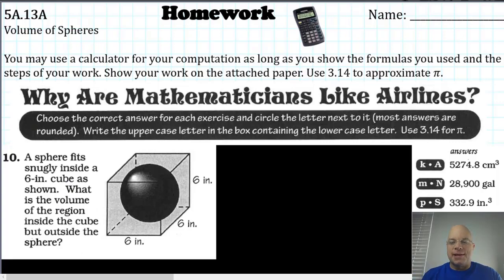For some reason I'm having trouble saying the word sphere. The region inside the cube but outside the sphere can be found by finding the volume of the cube and then subtracting the volume of the sphere. The key word here, as far as understanding the dimensions, is this word snugly.